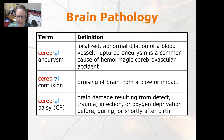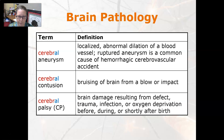Cerebral aneurysm is a localized abnormal dilation of a blood vessel. A ruptured aneurysm is a common cause of a hemorrhagic cerebrovascular accident, also known as a hemorrhagic CVA or a hemorrhagic stroke.